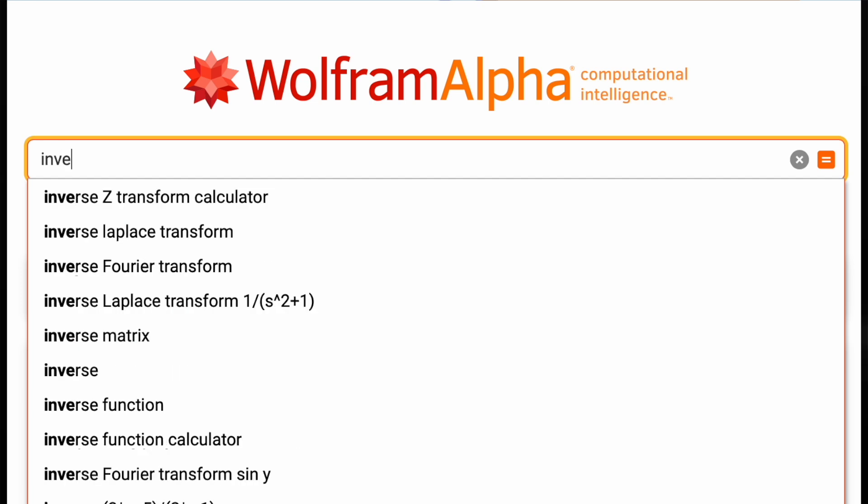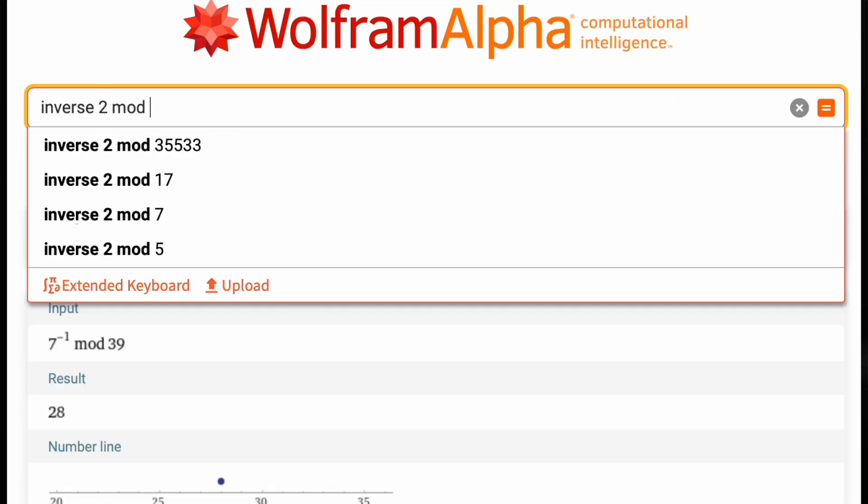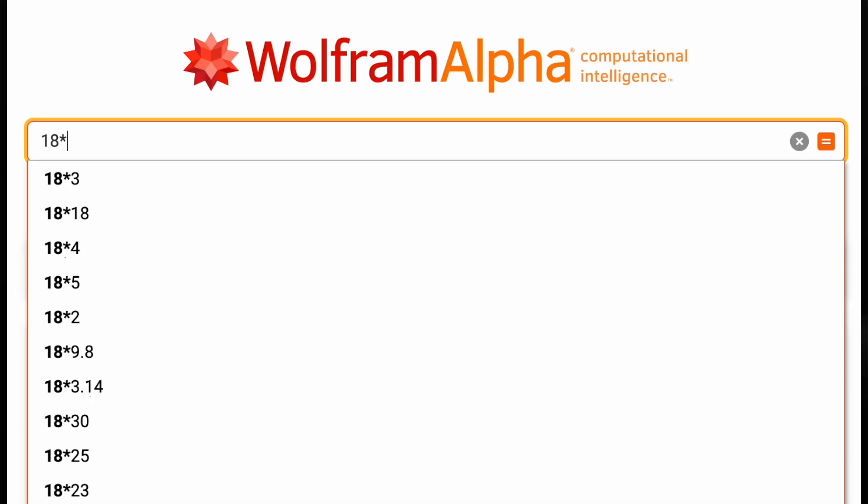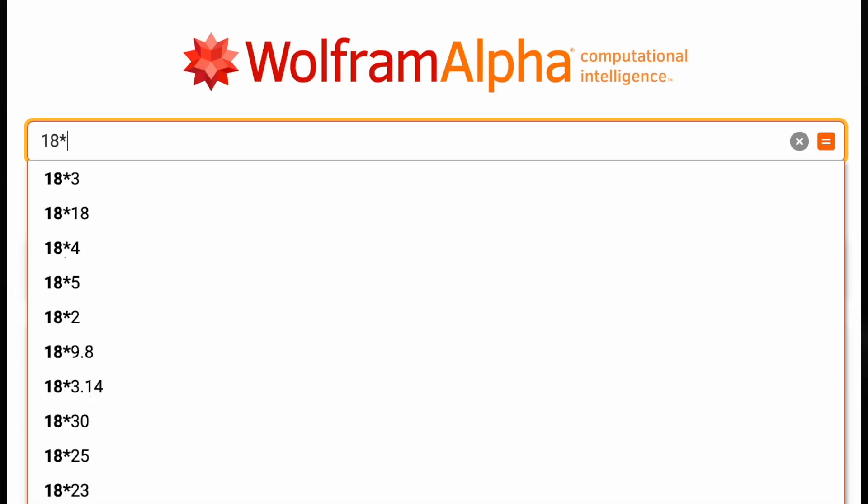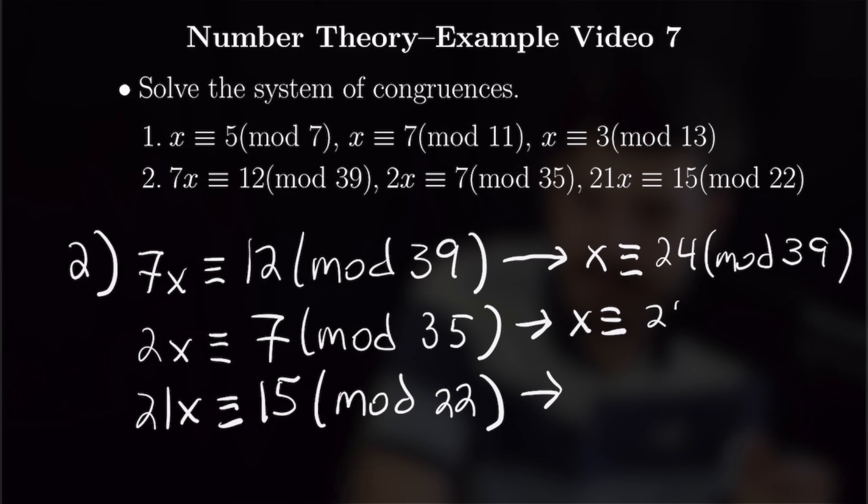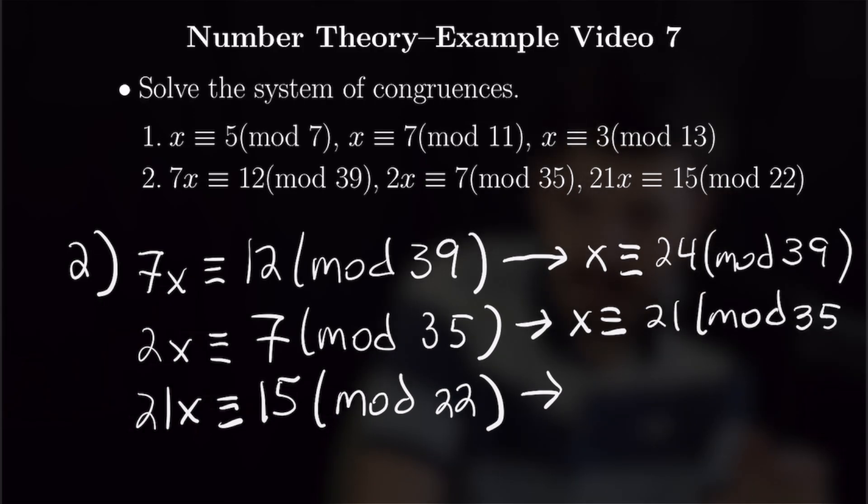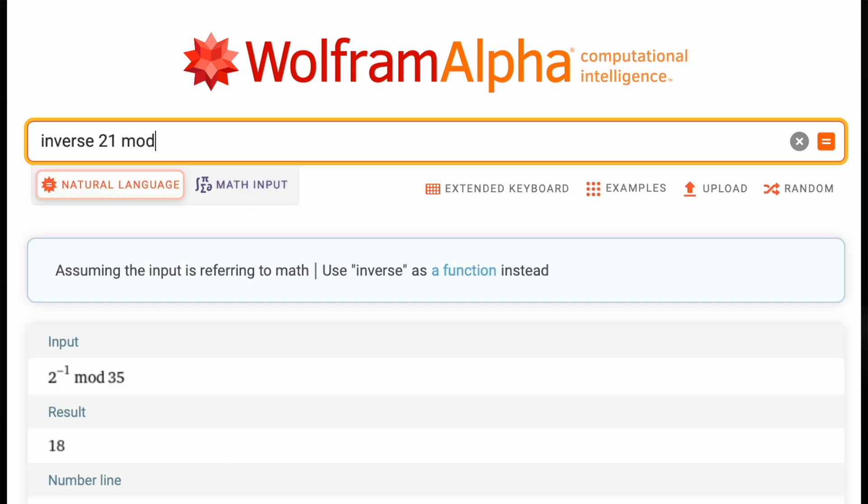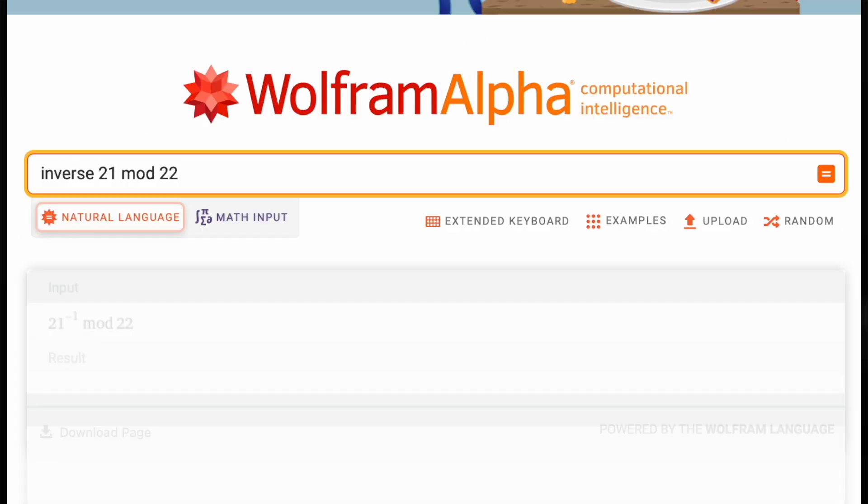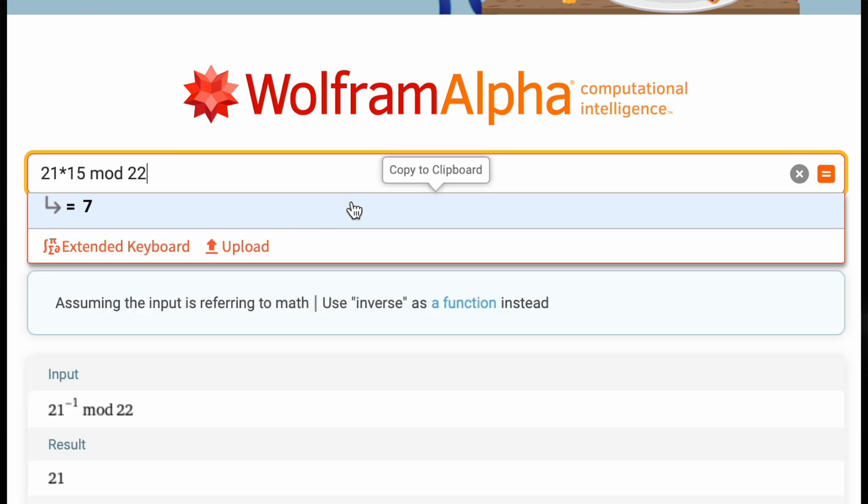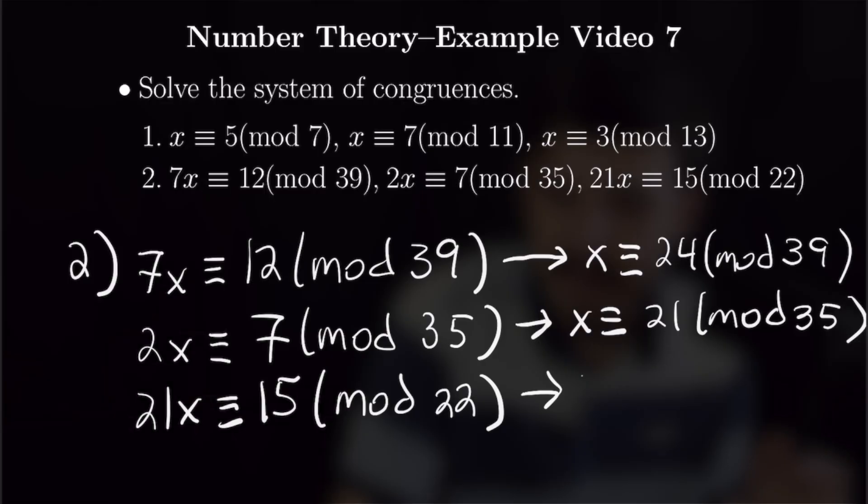For the second one, we are going to calculate the inverse of 2 mod 35, and we will find that that is equal to 18. So we're going to multiply 7 by 18, and then reduce mod 35, and we will find that that is equal to 21. So we will rewrite our second congruence as x congruent to 21 mod 35. And lastly, we will find out the inverse of 21 mod 22, and that is equal to 21. So we will multiply 15 times 21 and reduce mod 22 to get 7 and get our third and final equation, x is congruent to 7 mod 22.